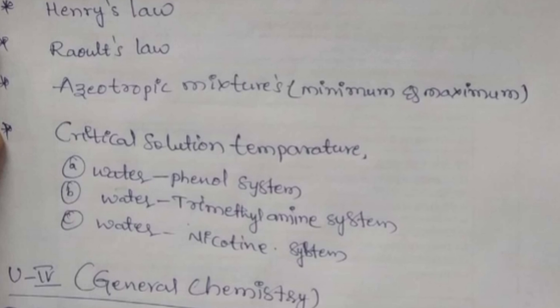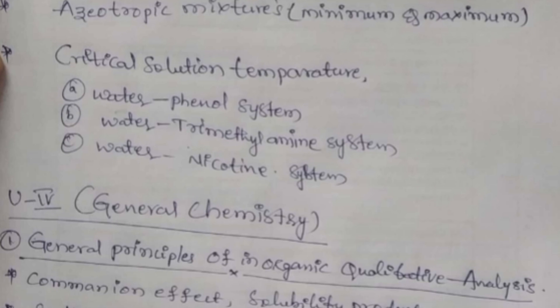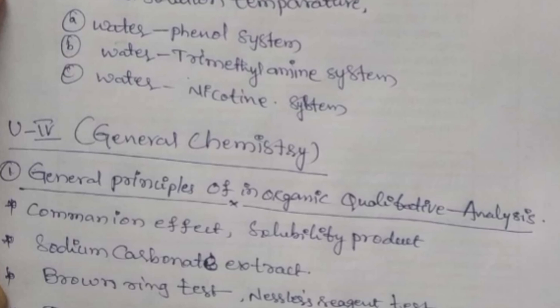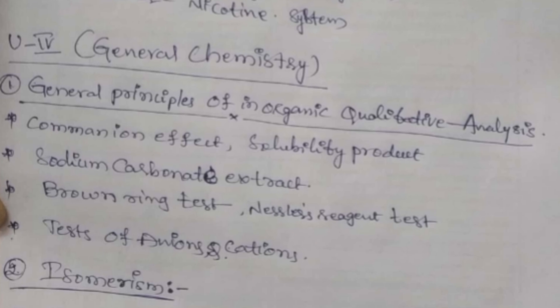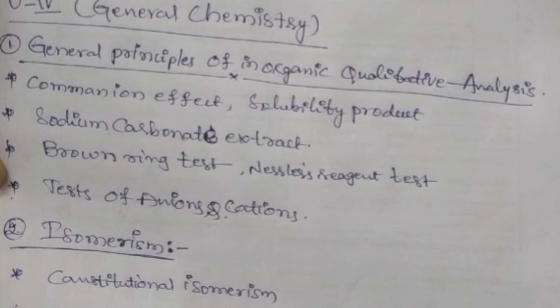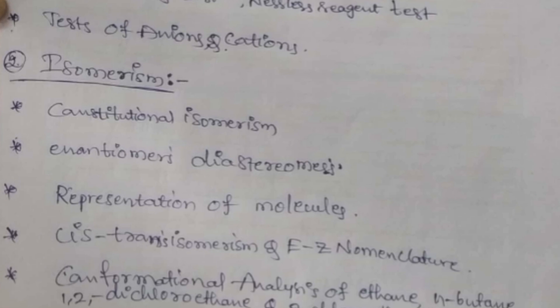This is also important. And the fourth chapter name is General Chemistry. So only four chapters you will have. So simply you should learn any two chapters perfectly, so you will easily get passing marks.